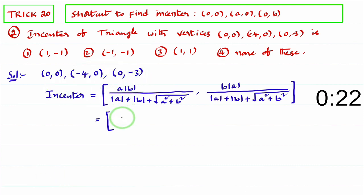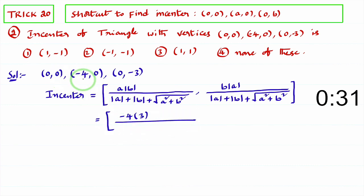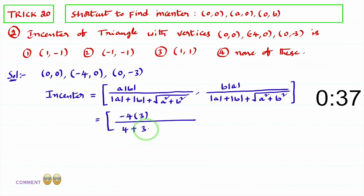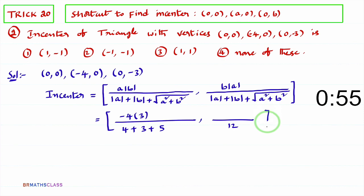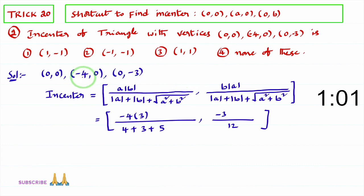Substituting into the formula: a·|b| = (-4)·|-3| = (-4)·3 = -12, divided by |a| + |b| + √(a² + b²) = |-4| + |-3| + √((-4)² + (-3)²) = 4 + 3 + √(16 + 9) = 4 + 3 + √25 = 4 + 3 + 5 = 12. For the second coordinate: b·|a| = (-3)·|-4| = (-3)·4 = -12, divided by 12.